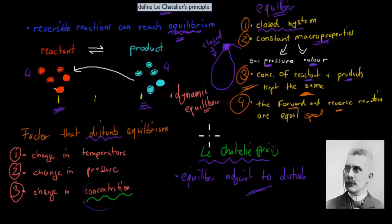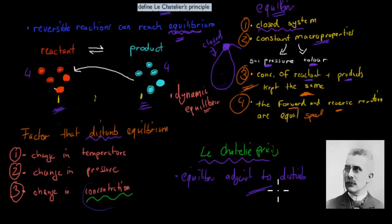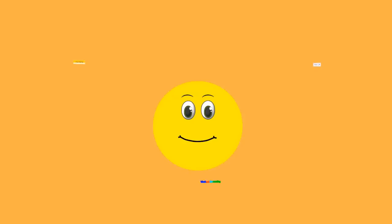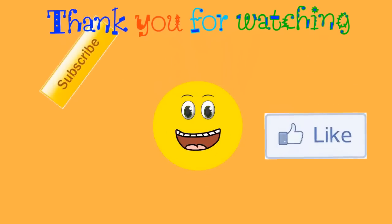This is what Le Chatelier's principle is all about — equilibrium and what happens if we change any of these factors. If we change temperature, pressure, or concentration, the equilibrium adjusts to keep everything constant. We'll talk more about that in the next couple of videos, but this was just a quick introduction. I hope this was useful. Thank you for watching.